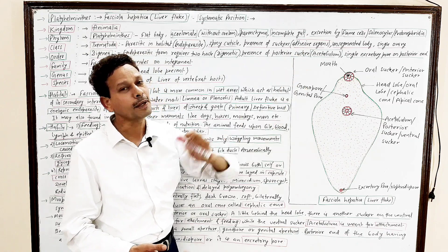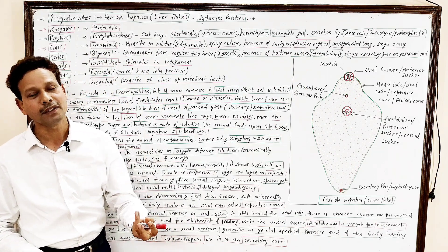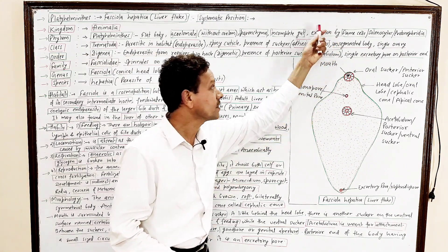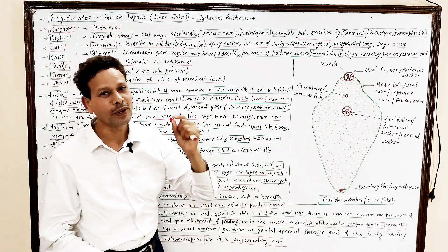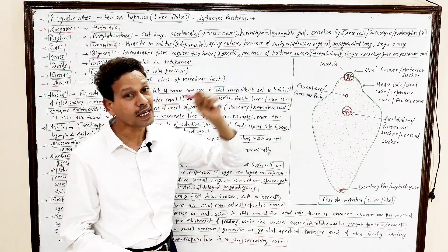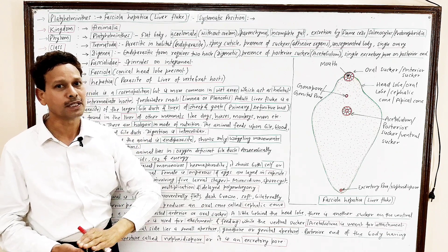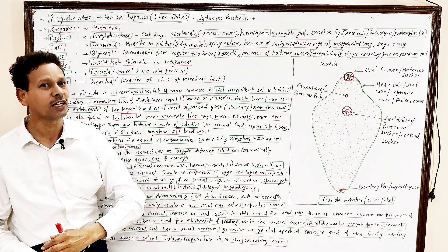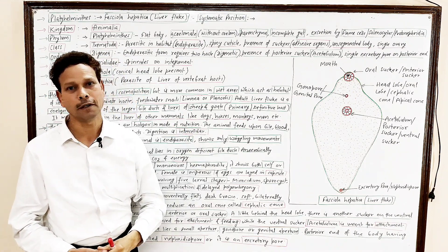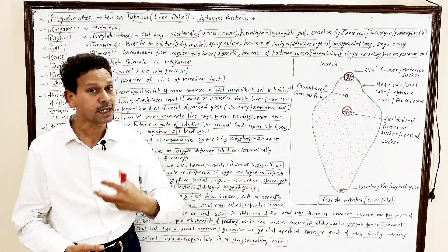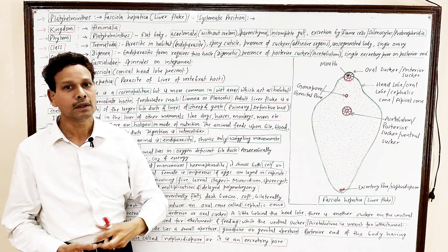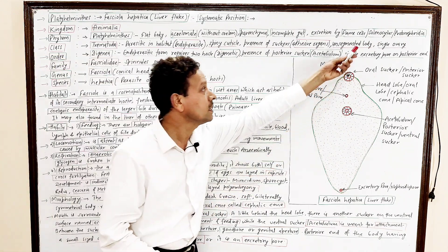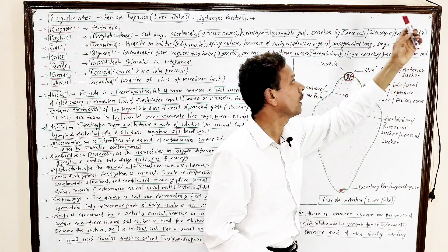Incomplete gut. The alimentary canal, the gut is incomplete. It means only one opening is present, no anus. Excretion, each and every point, very important. In these Platyhelminthes, flatworms, flukes, liver flukes, the excretion by special type of cells in which bundle of cilia, and due to presence of bundle of cilia which present in their cavity, lumen, appears as a flame. These are flame cells, these are solenocytes, these are protonephridia.